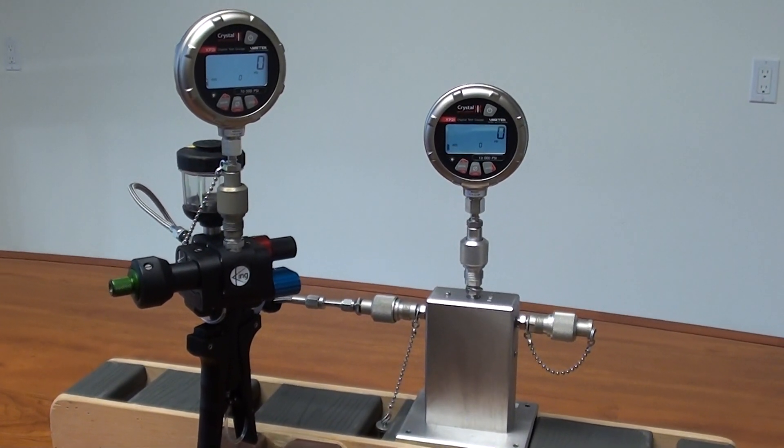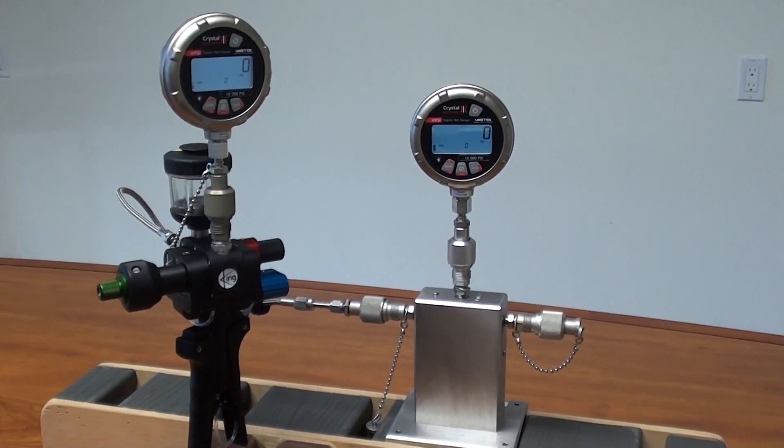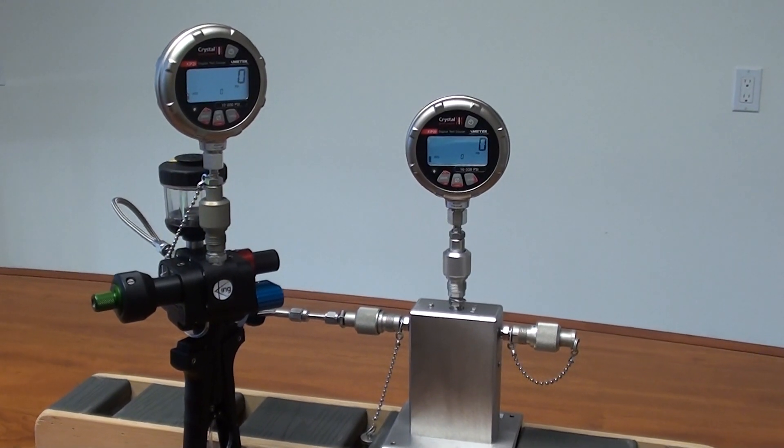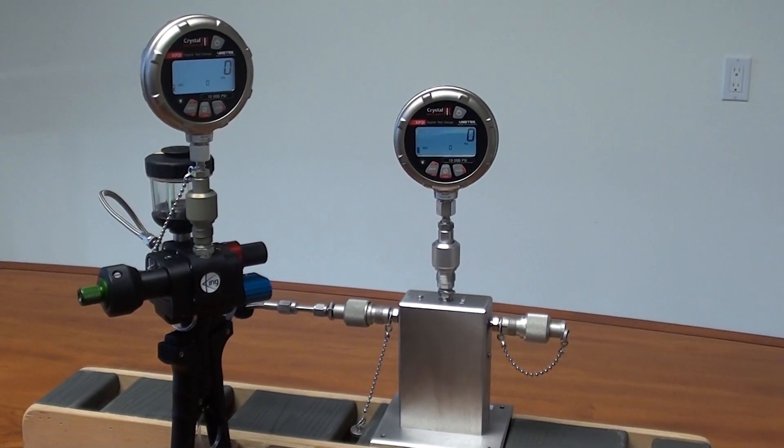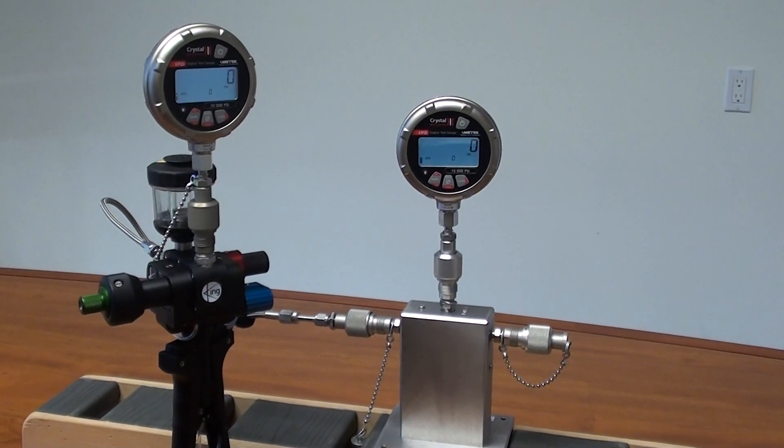The purpose of this demonstration is to show how fast we can get from 0 to 10,000 PSI using a King Neutronics Model 3750 hand pump.